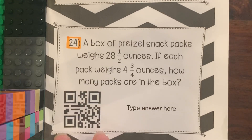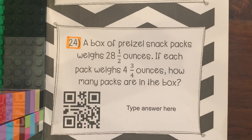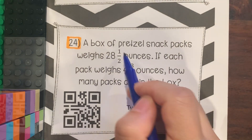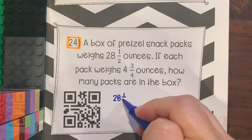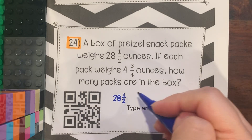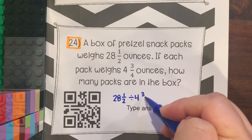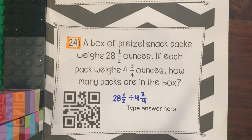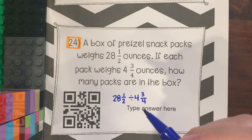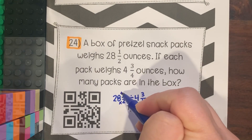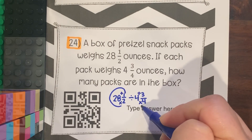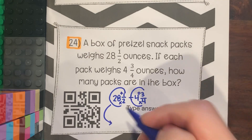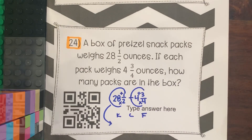Number 24: A box of pretzel snack packs weighs 28 and a half ounces. If each pack weighs 4 and 3/4 ounces, how many packs are in the box? You have 28 and a half ounces, and you divide by 4 and 3/4 ounces. Step one: do around the world for both mixed numbers. Once you do that, do KCF to solve.